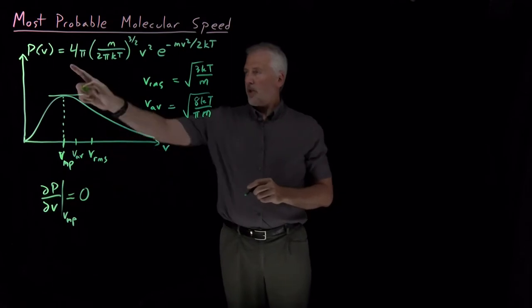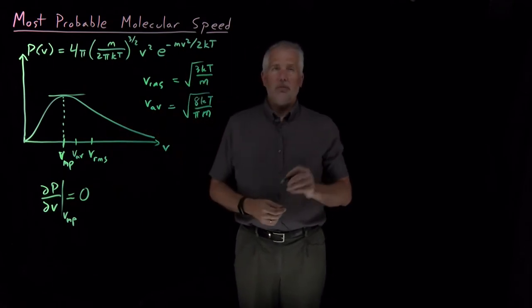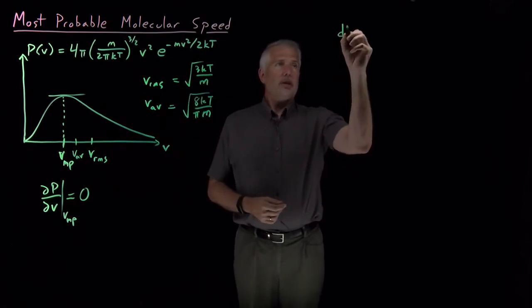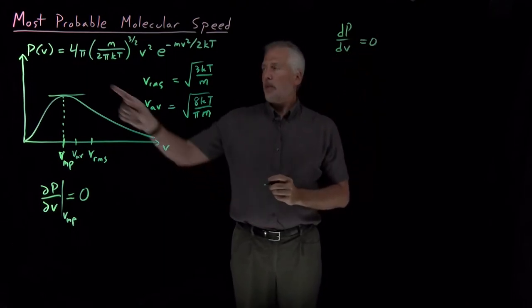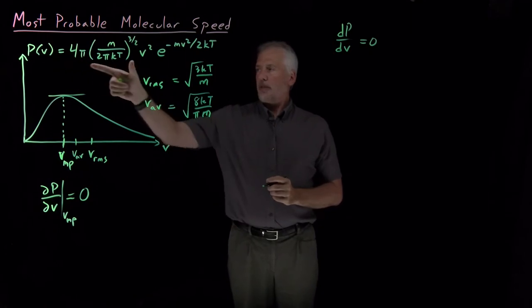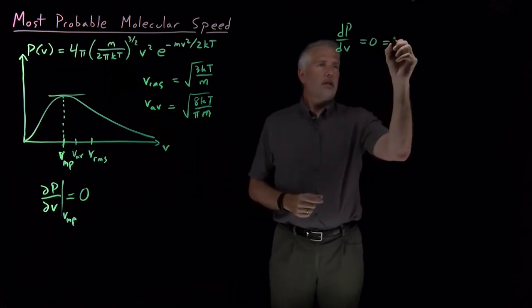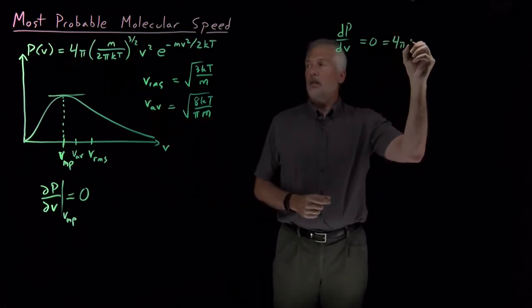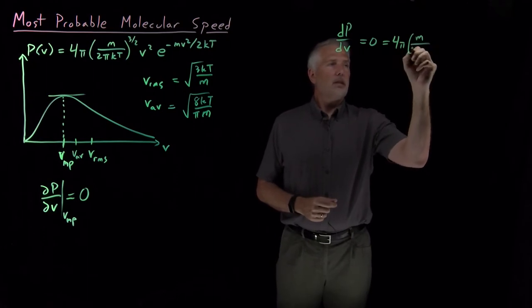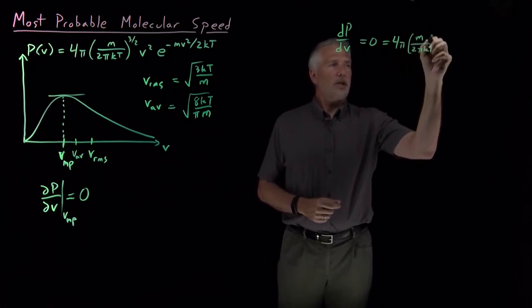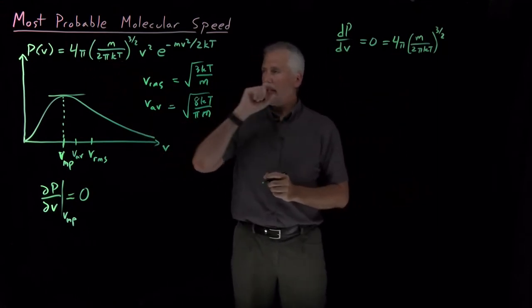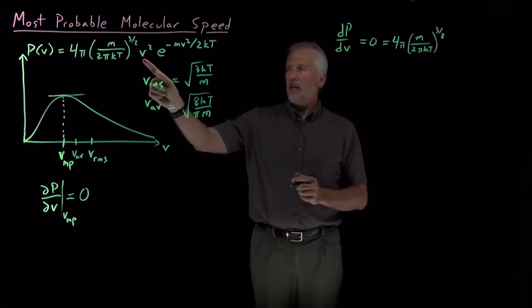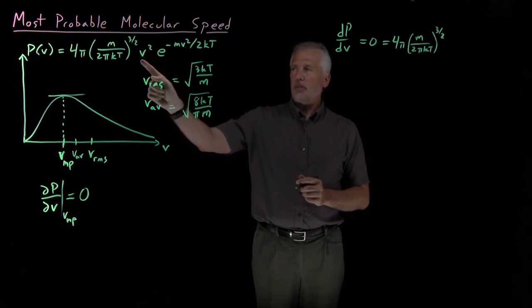So let's go ahead and take the derivative of the Maxwell-Boltzmann distribution. We want dP/dV to be equal to zero. The derivative of this expression: I've got some constants out front, 4π times (m over 2πkT) to the 3/2, and then the derivative has V showing up twice in it.